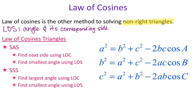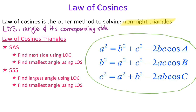Law of cosines is represented by three formulas that look very similar to each other. The only difference is that the A's, B's, and C's are switched around. Whatever angle I have, the angle and its corresponding side are on opposite sides of the formula. So if I'm trying to solve for side A, I need angle A at the end of the formula. Instead of looking at three different formulas, I treat it as just one formula with A's, B's, and C's being interchangeable.